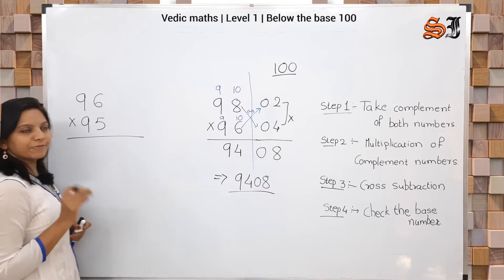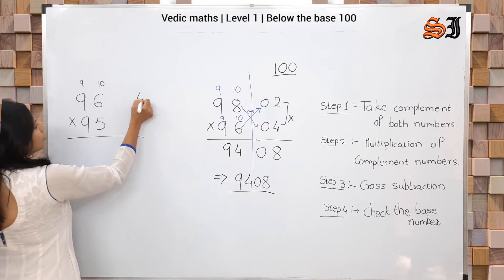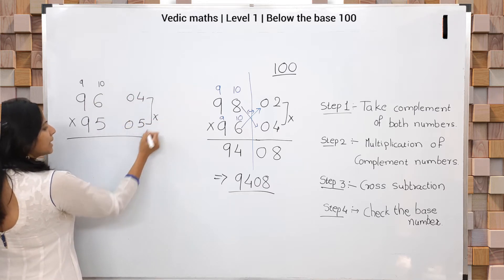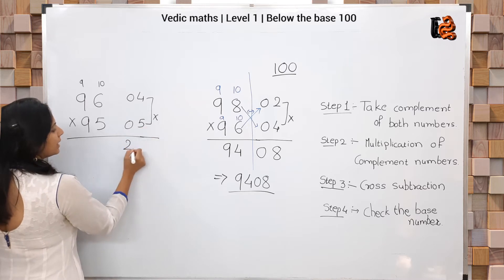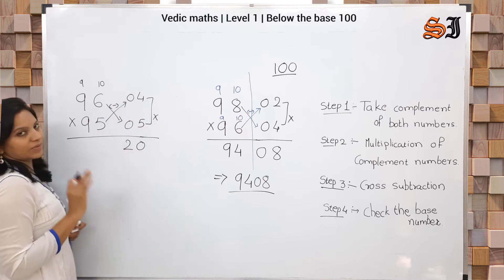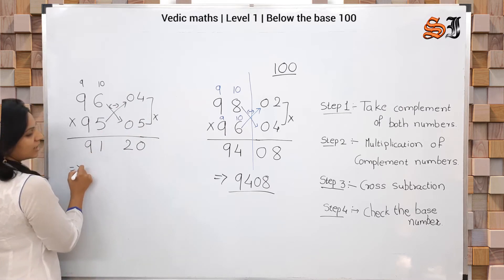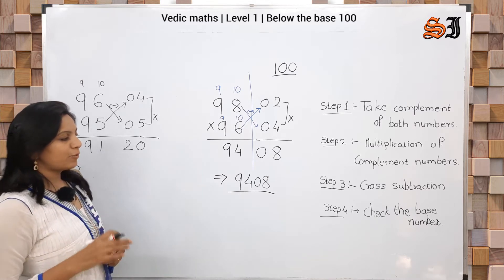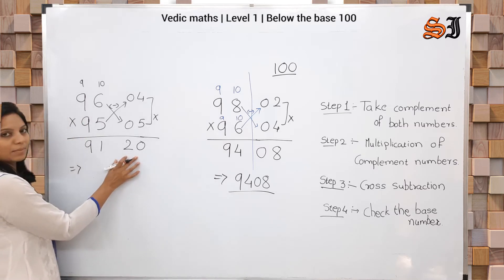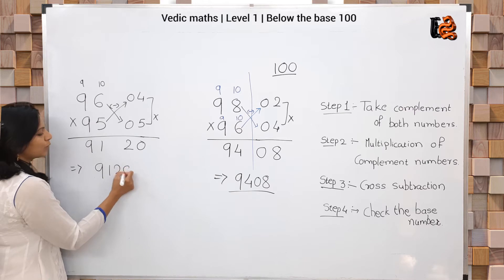Example: 96 × 95. Step 1 — take compliments of both: 10 minus 6 = 4, 9 minus 9 = 0, so compliment is 04; and 10 minus 5 = 5, 9 minus 9 = 0, so compliment is 05. Step 2 — multiply compliments: 4 × 5 = 20. Step 3 — cross subtraction: 96 minus 5 or 95 minus 4, both give 91. Step 4 — check the base number: base is 100, two zeros, so we need two digits on the right. Answer: 9120.